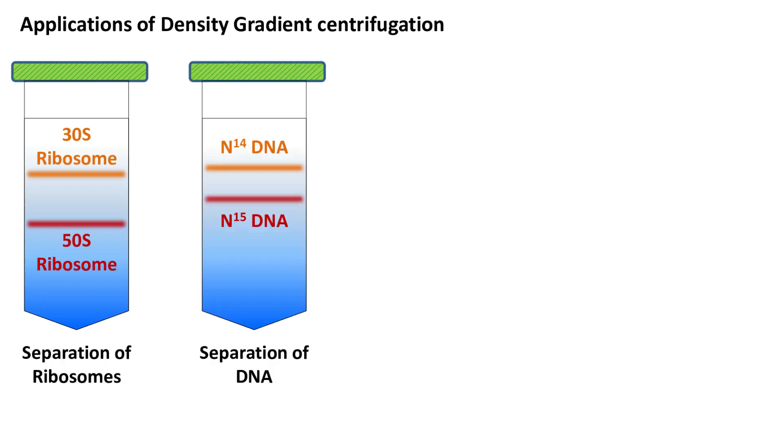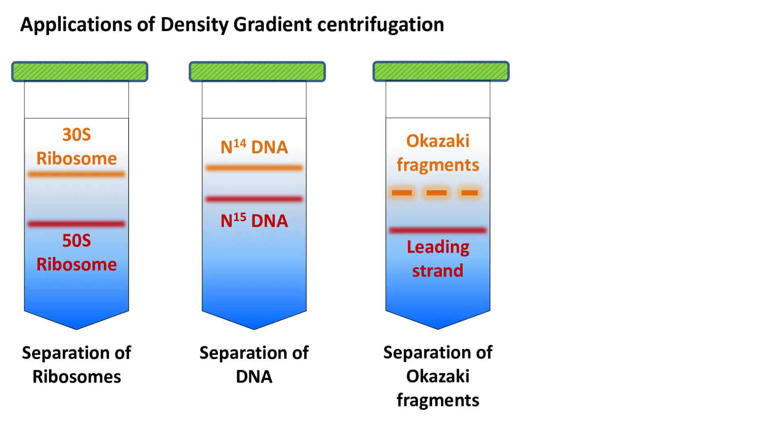Density gradient centrifugation is one of the widely used techniques in biochemistry, cell biology, and molecular biology. For example, separation of different subunits of ribosomes, separation of DNA containing N14 and N15 isotopes, and separation of Okazaki fragments are all possible with the use of density gradient centrifugation.